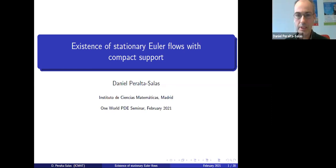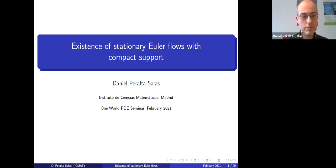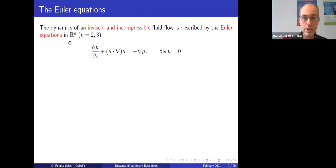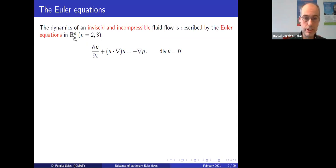I'm going to talk about a topic that I think is really exciting and interesting, which is the search for stationary solutions of the Euler equations of hydrodynamics which have compact support. First I'll introduce very briefly what the Euler equations are. They are a system of partial differential equations describing the motion of a fluid flow that is incompressible and has no viscosity, considered in space dimension two or three.